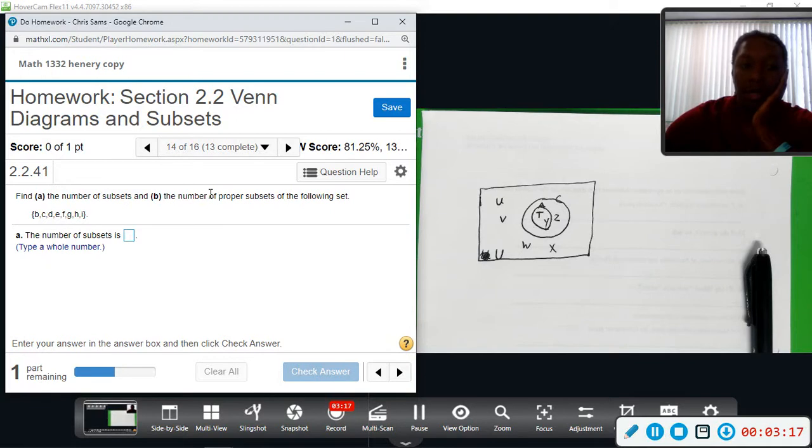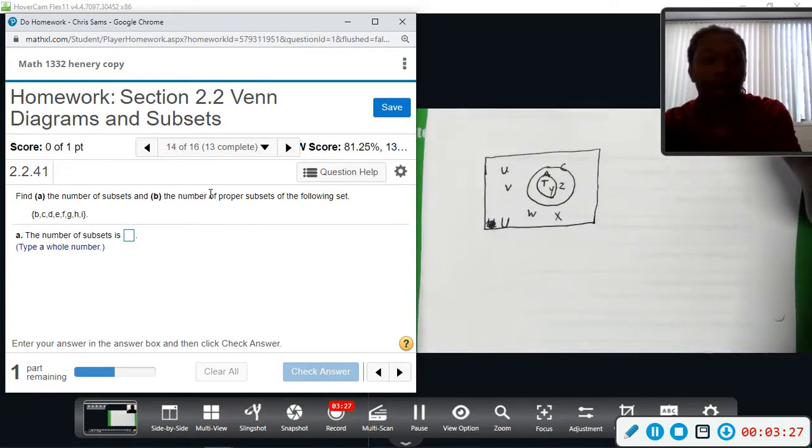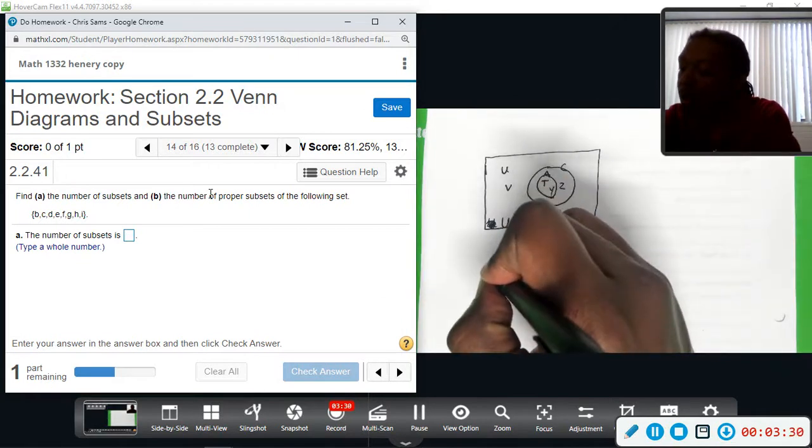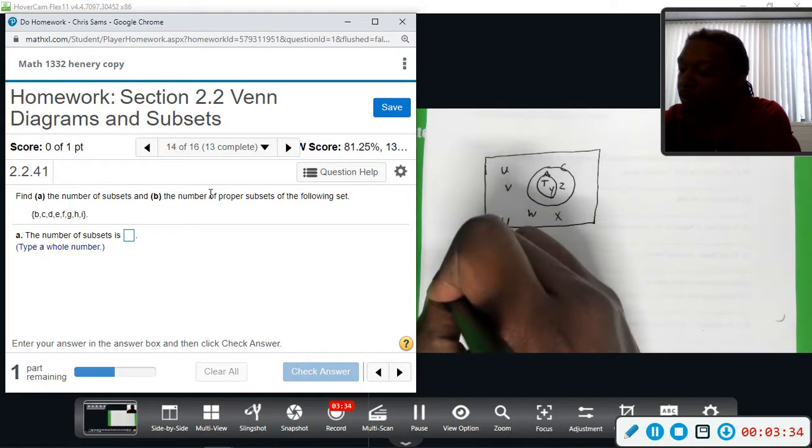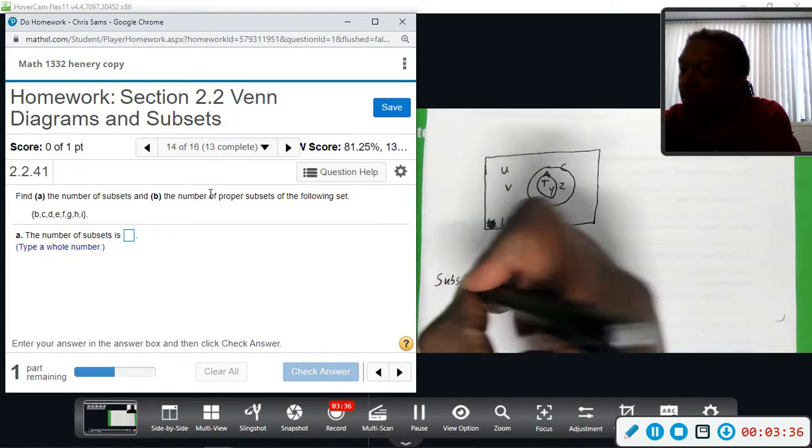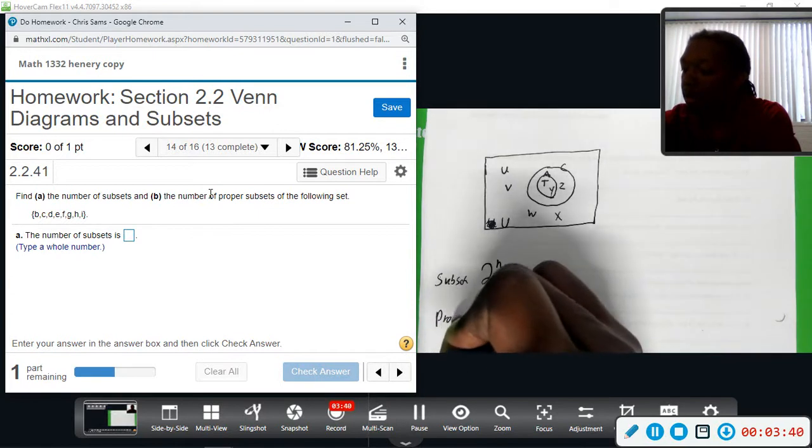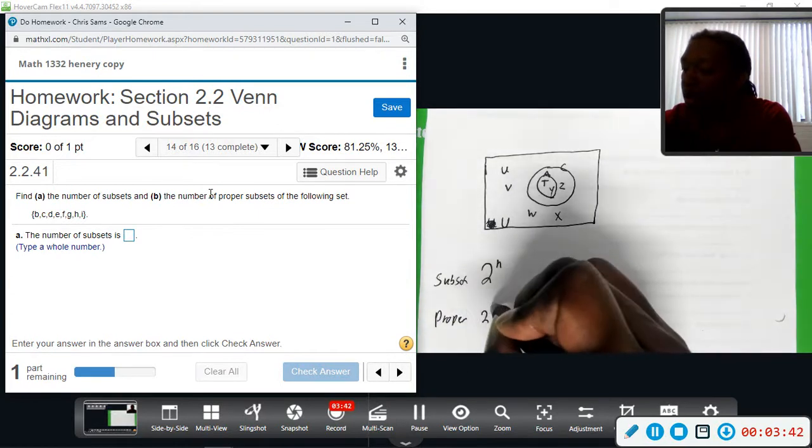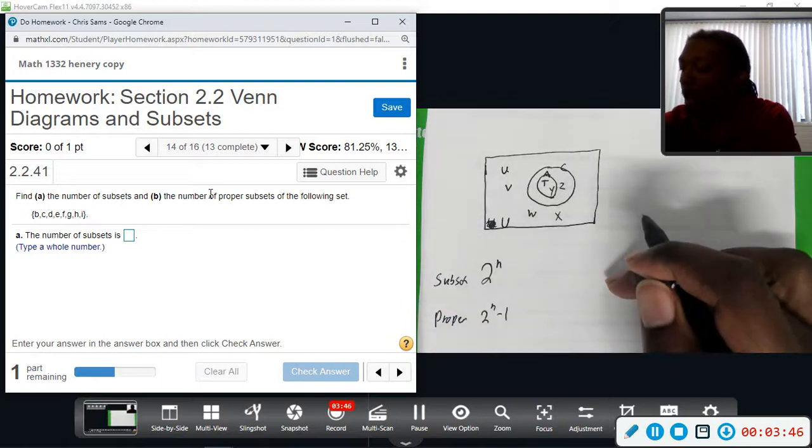Number 14. We want to find the number of subsets and the number of proper subsets. So just go back to the formula. Subsets are 2 to the n power, and proper subsets are 2 to the n minus 1. So all we have to do is find this, get proper, and then subtract 1.